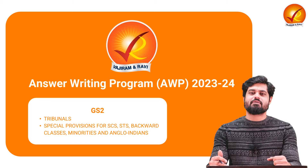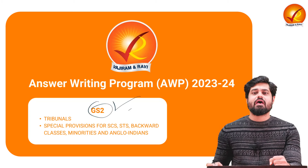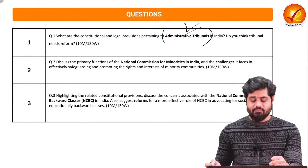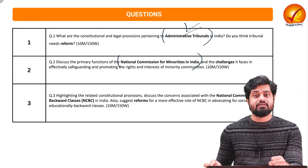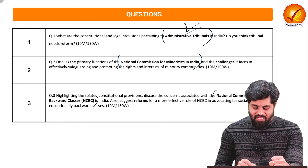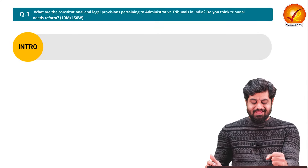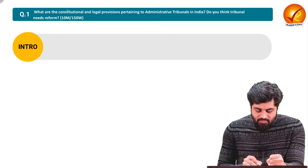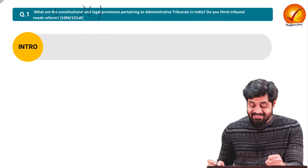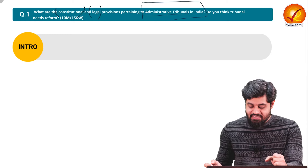Hello and welcome to the main Sansa writing program discussion. In this video I will be covering three questions related to the GS2 paper and three topics: number one is administrative tribunals, number two is national commission for minorities in India and challenges associated with that, and number three will be national commission for the backward classes in India.